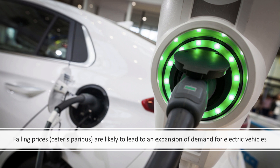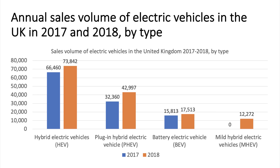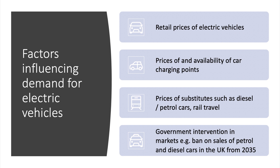Here's a theoretical statement: falling prices, Ceteris Paribus, are likely to lead to an expansion of demand for electric vehicles. The number of electric vehicles in the UK by type for 2017 and 2018 is shown in this chart — note the surge in hybrids and plug-ins in 2018. As prices go down for electric vehicles, as the retail price falls, producers exploit economies of scale and more firms enter the market, increasing supply.